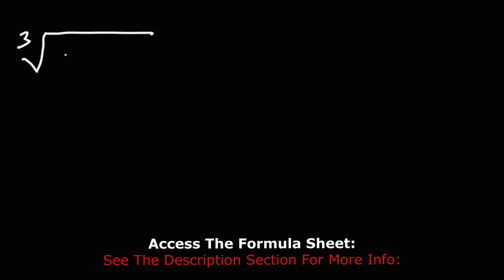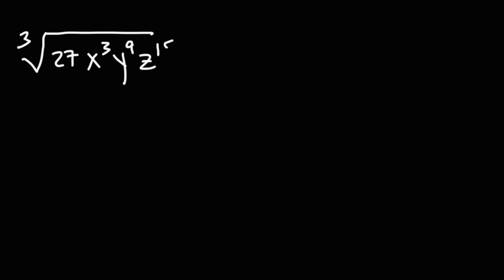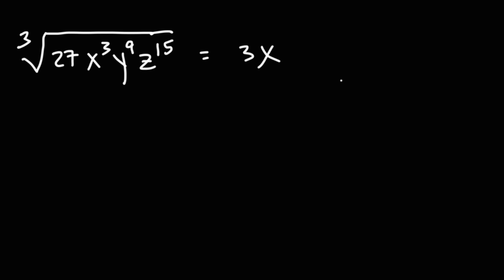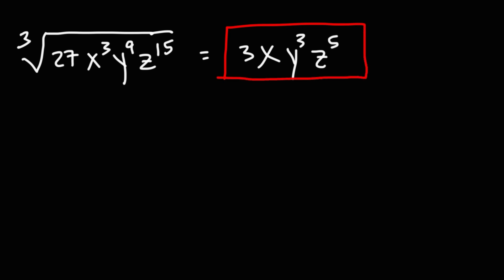Go ahead and simplify this radical: the cube root of 27, x to the third, y to the ninth, z to the 15th. Since we have an odd index number, we're not going to have any absolute value symbols for this problem. The cube root of 27 is three. The cube root of x to the third — three divided by three is one, so it's just x. The cube root of y to the ninth — nine divided by three is three, so this is y to the third power. The cube root of z to the 15th — 15 divided by three is five, so it's z to the fifth power. The answer is 3xy³z⁵.